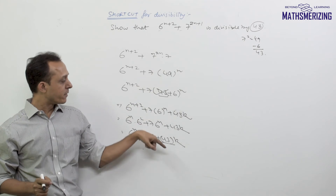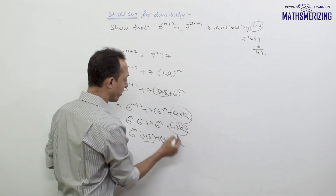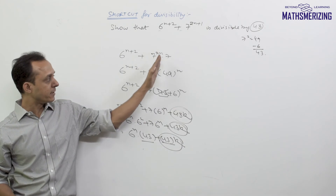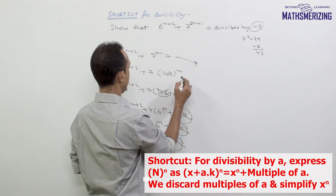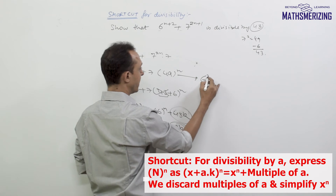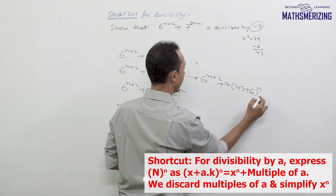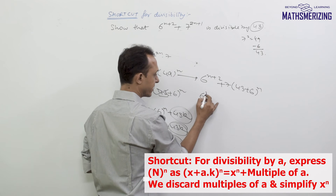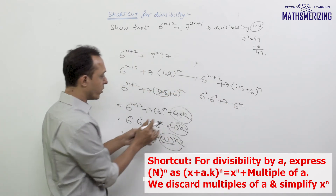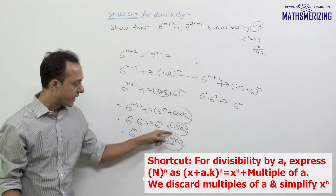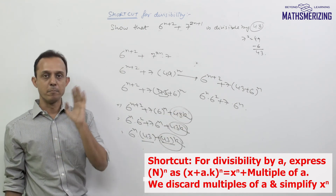In all the subsequent questions I'll not write this 43k, because I know all these expressions will be divisible by 43. So I'll simply write 6 to the power n plus 2, and then 7 — this is 43 plus 6 to the power n — so I'll just write 6 to the power n into 6 squared, 7 into 6 to the power n. I won't write this 43k every time. This is how we are going to use the shortcut for divisibility problems.